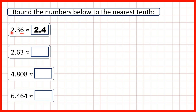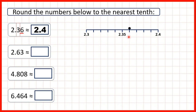The digits before what we've circled stay the same, so the two in the ones stays the same, but because we're rounding up, the three changes into a four. We can show 2.36 on a number line — if each of these squares is one hundredth, we can see that 2.36 is between 2.3 and 2.4, but because it's closer to 2.4, 2.36 rounds to 2.4.